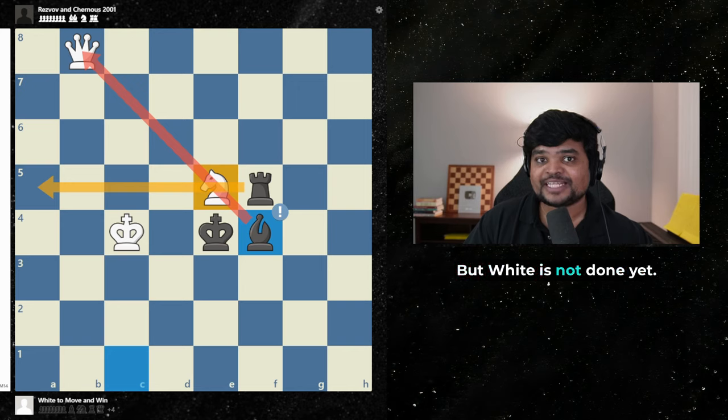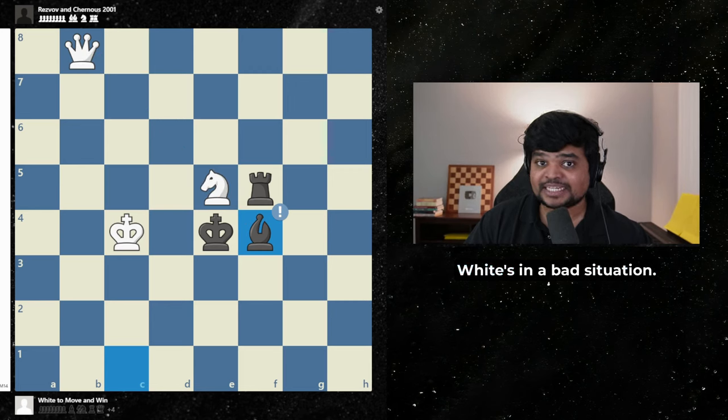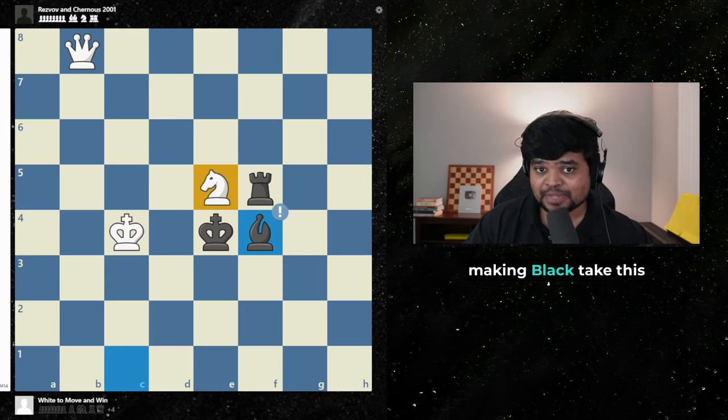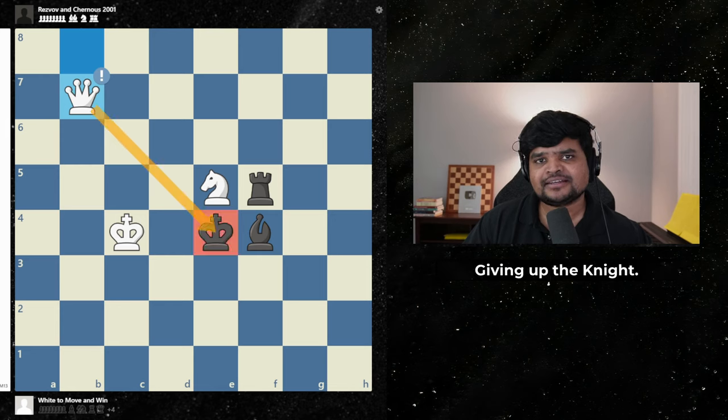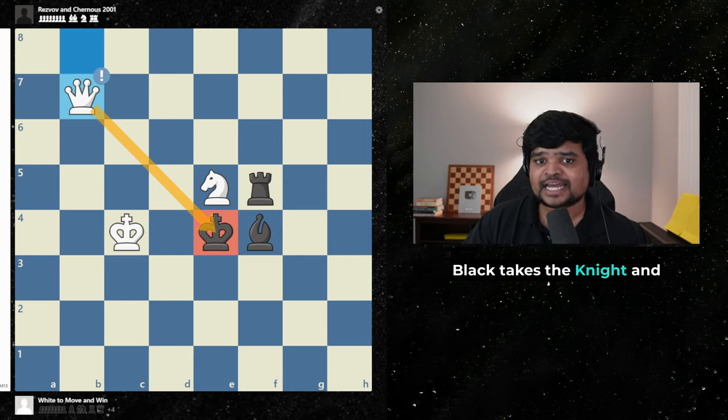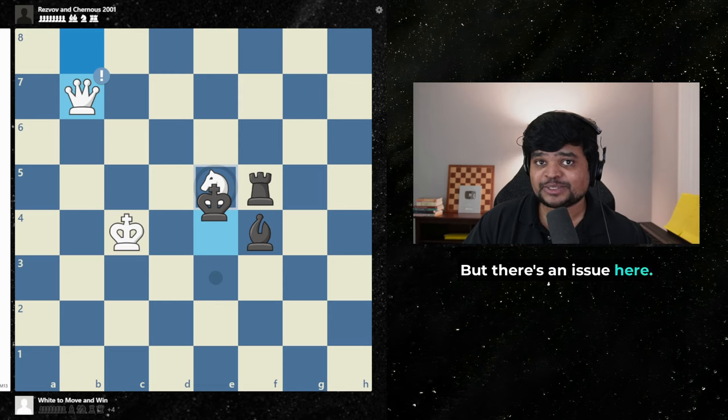But white is not done yet. White's in a bad situation but we can turn it around by making black take this knight on our terms. White plays queen b7 check. Black takes the knight and thinks that they're safe. But there's an issue here. Can you see why?